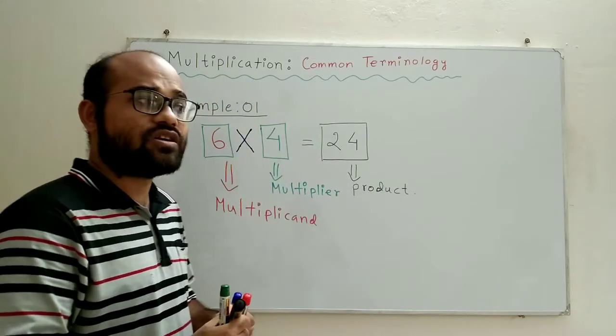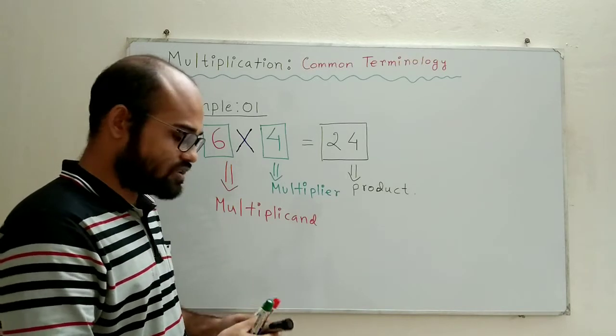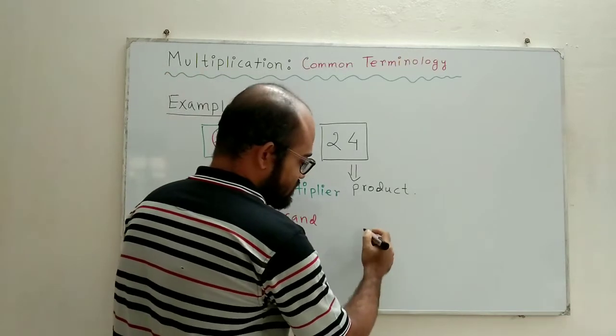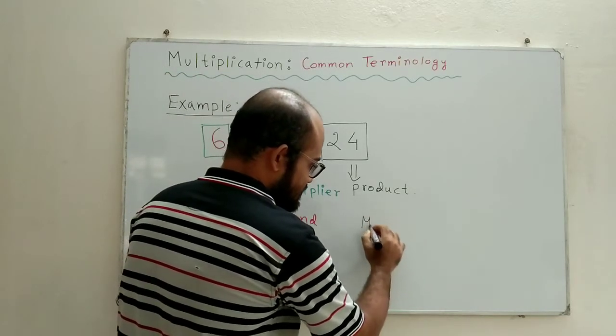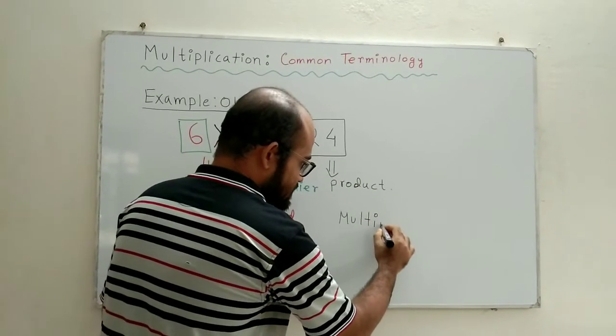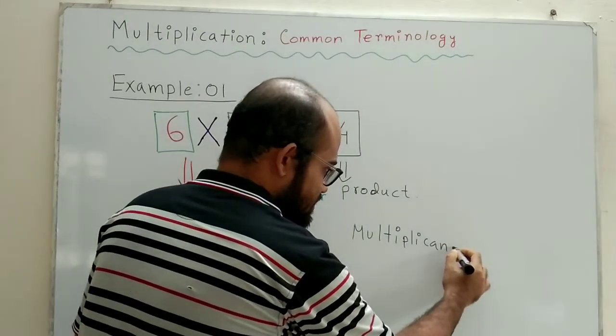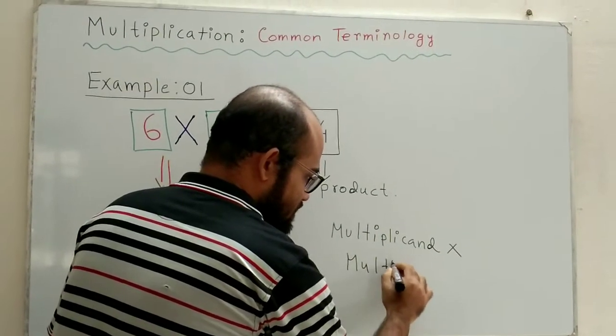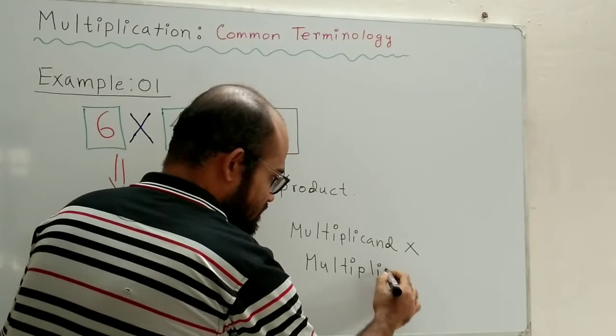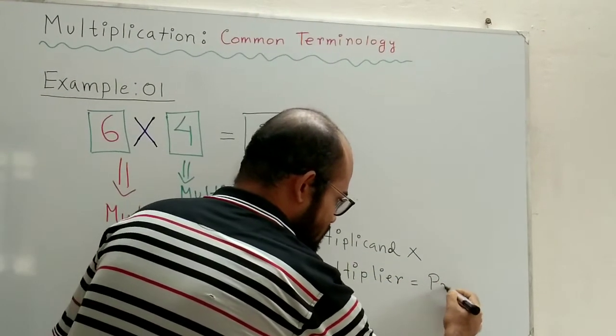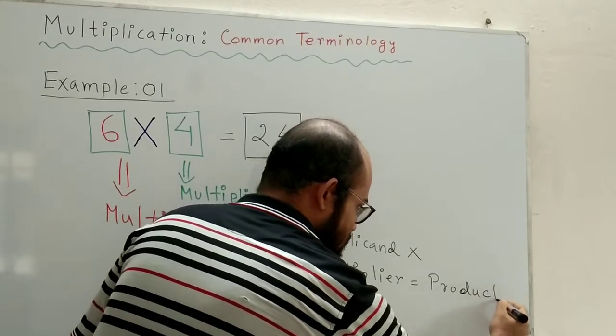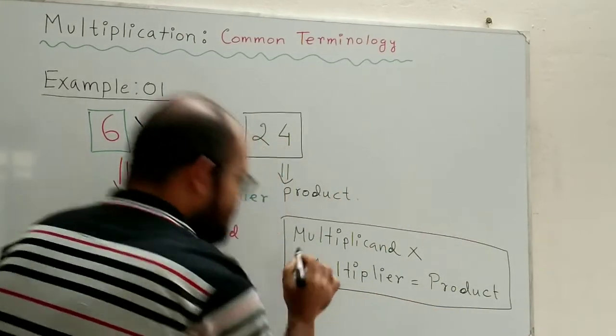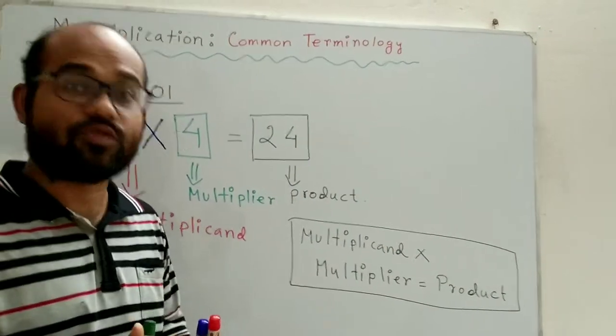So, using our newly found names, we can actually establish a very neat formula. It is multiplicand times multiplier equals product. So, we can say that multiplicand times multiplier gives me product.